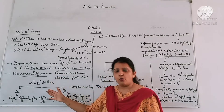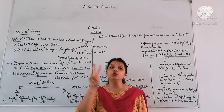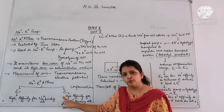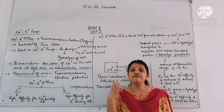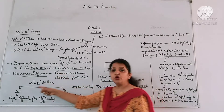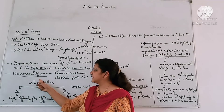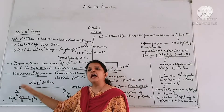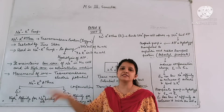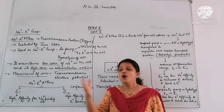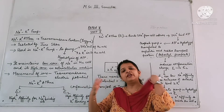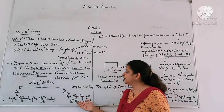A very important factor for Na+ K+ ATPase is that it exists in 2 conformations: E1 and E2. These 2 conformations have different affinities for ions. In the E1 conformation, Na+ K+ ATPase has high affinity for Na+ ions — meaning it binds Na+ more strongly. When Na+ K+ ATPase is in the E2 conformation, its affinity for Na+ becomes low and its affinity for K+ becomes high.